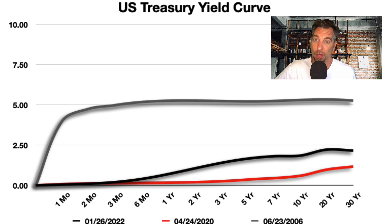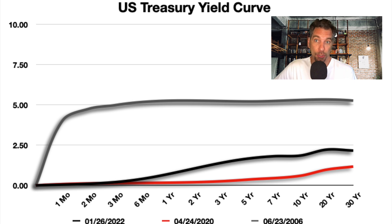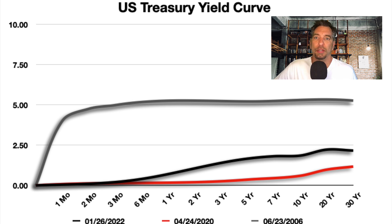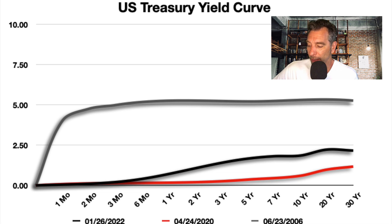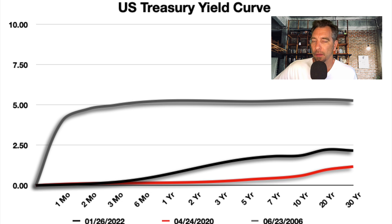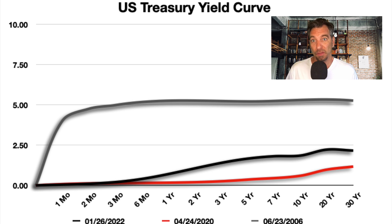Back in January when I talked about the yield curve, I showed three bars. The gray was June 2006. The red was the lowest point during the pandemic — April 24th, 2020 — when interest rates across the board were rock bottom, with the 30-year at just 1.25%. The black line from January showed the yield curve inflating, yet the yield curve still wasn't even close to normal, and that was the period when the stock market was selling off all through January.